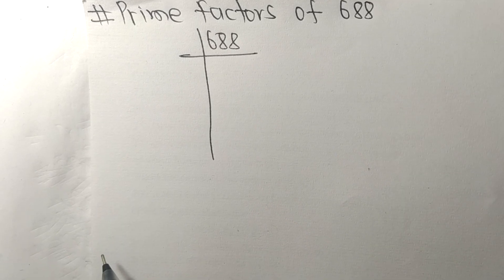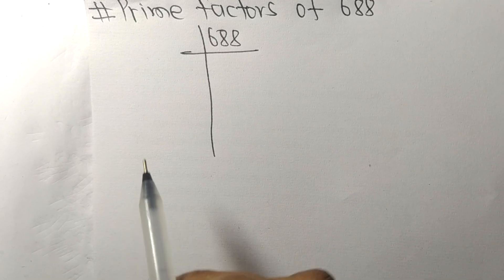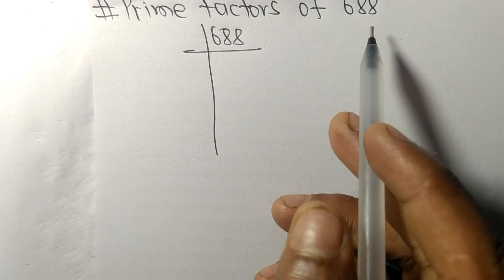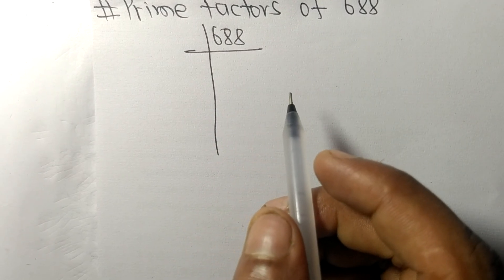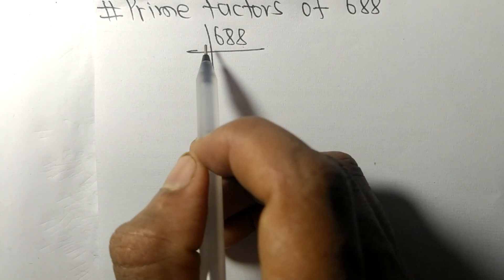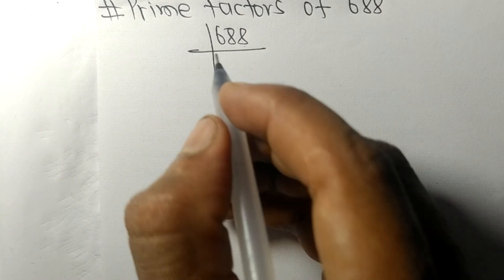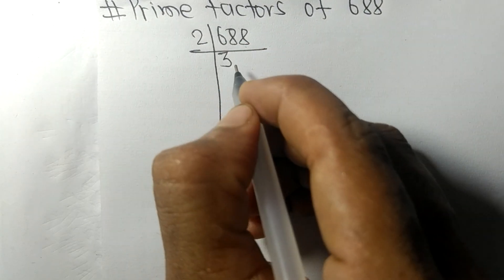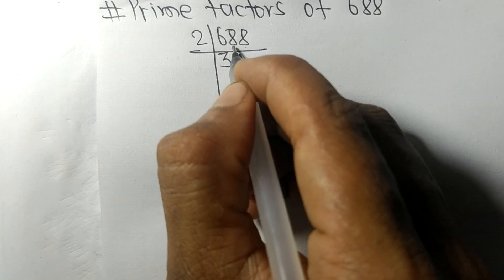Today in this video we shall learn to find the prime factors of 688. It has an even number 8 at the end, so these whole numbers are divisible by 2. Two times 3 is 6, two times 4 is 8.